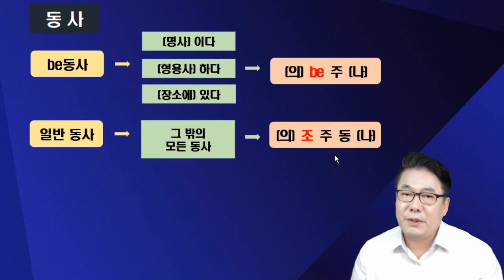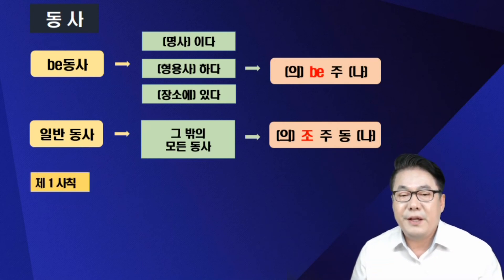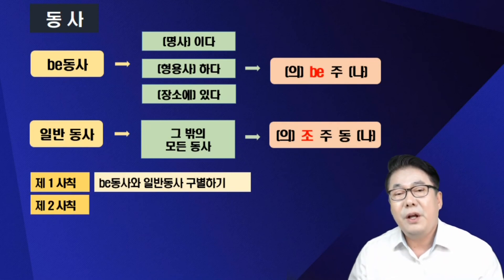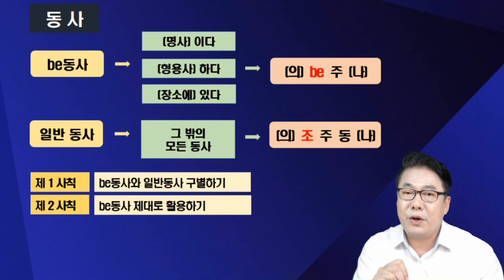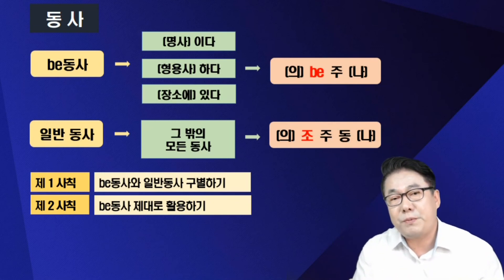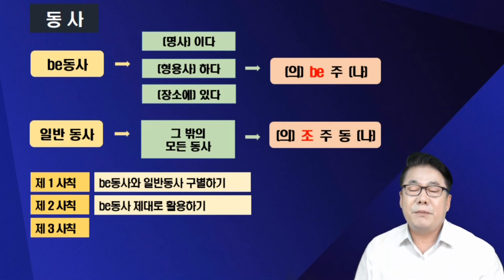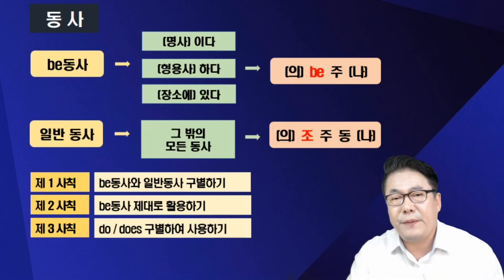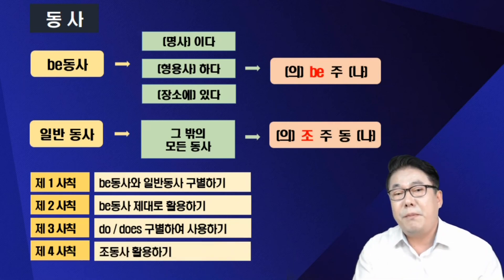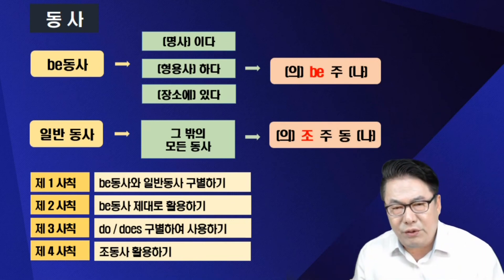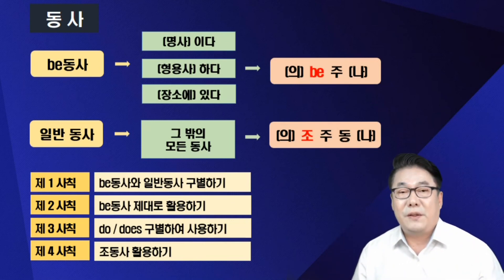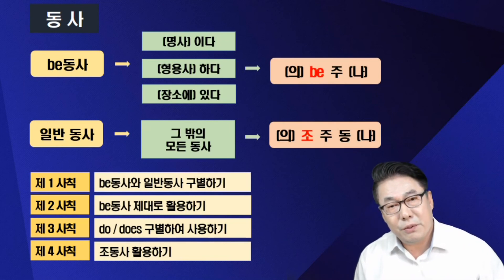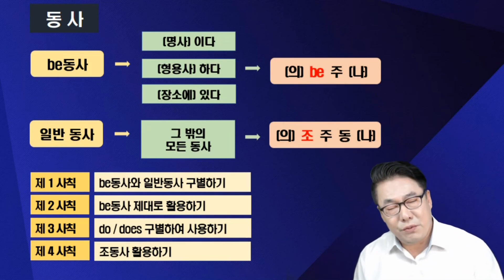영어를 할 때 순서라는 게 있습니다. 영어의 사칙연산은, 첫 번째는 비동사·일반 동사를 우리말 서술어에서 구별하는 것. 두 번째는 비동사를 제대로 활용하게 주어의 시제에 따라 Am, Is, Was를 본능적으로 쓰는 연습. 세 번째는 Do·Does 잡기. 네 번째는 조동사 Can, Must, Will, May를 자유자재로 쓰는 것. 이 영어 사칙연산이 다 안 된 상황에서 우리가 십수 년 동안 엉뚱하게 어려운 공부만 했던 거죠. 기지도 못하는데 뛰려고 했던 거죠.